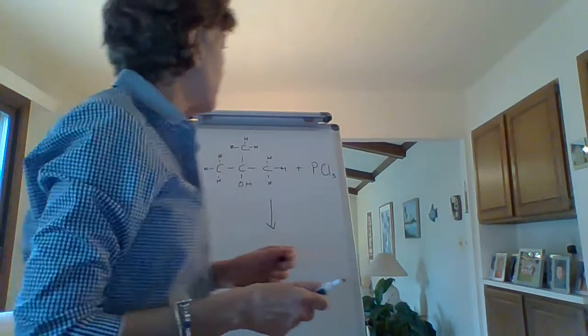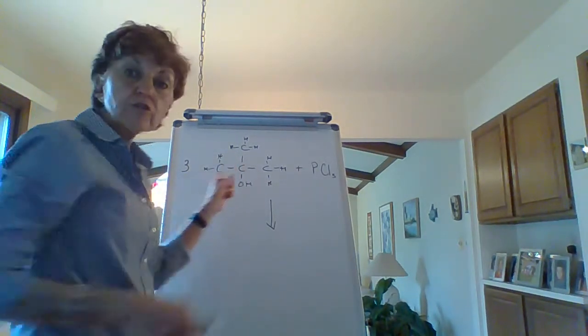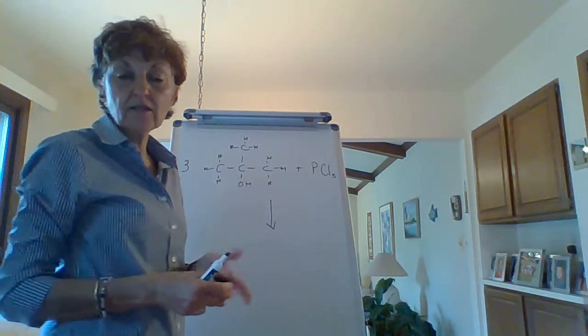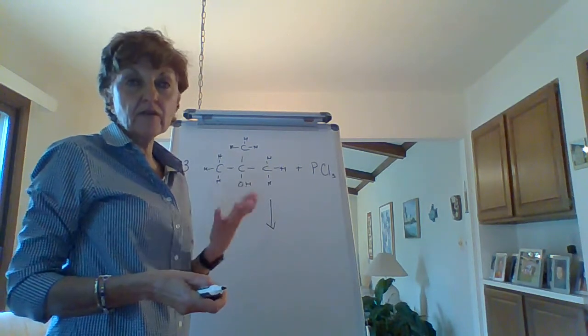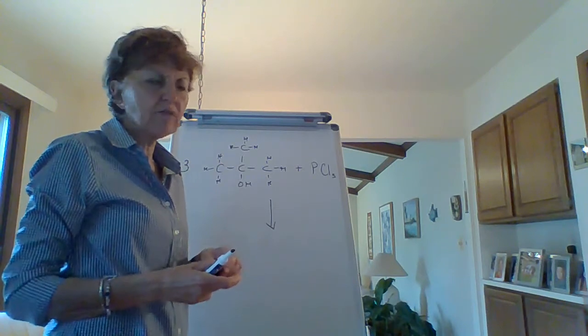In lab, we call it the Lucas test. With halogenation, tertiary alcohols react the fastest, secondary alcohols need a little bit of heat to react, and primary alcohols don't really react much.